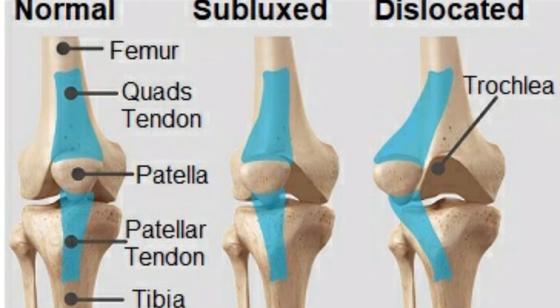First it shows the patella at its normal position. When subluxation occurs, it partially dislocates from its position. And in the next image, you can see it completely gets out of its socket, completely leaving its position — this is called dislocation.